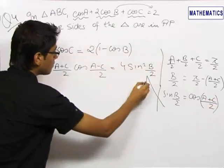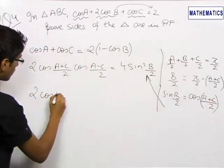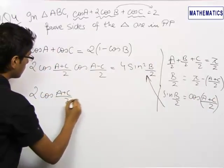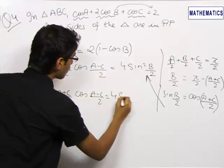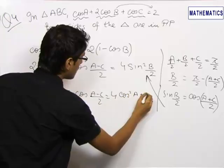Substituting the value of sin(B/2), we get 2 cos((A+C)/2) cos((A-C)/2) = 4 cos²((A+C)/2).